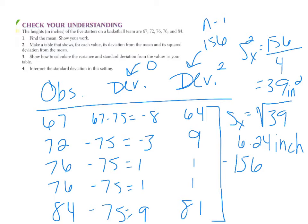Now interpret the standard deviation in context. Using the context of basketball players' heights, we would say: the players' heights typically vary by about 6.24 inches from the mean height of 75 inches. Remember, standard deviation is the typical or average distance the data points are from the mean, so your interpretation should always be placed in context.